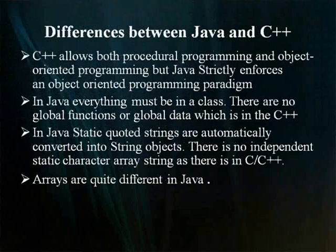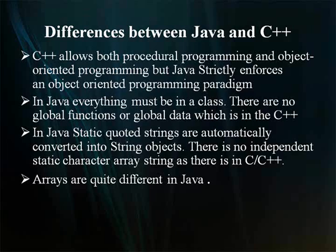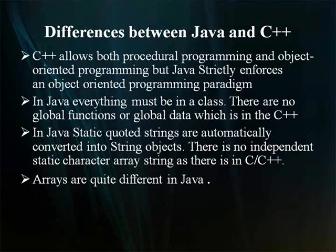There are a surprising number of differences between C++ and Java. These differences are intended to be significant improvements. This section takes you through the important features that make Java distinct from C++. C++ allows both procedural programming and object-oriented programming, but Java strictly enforces an object-oriented programming paradigm.